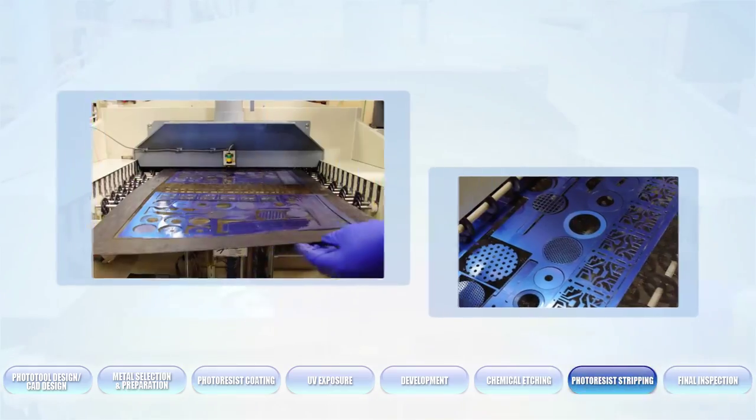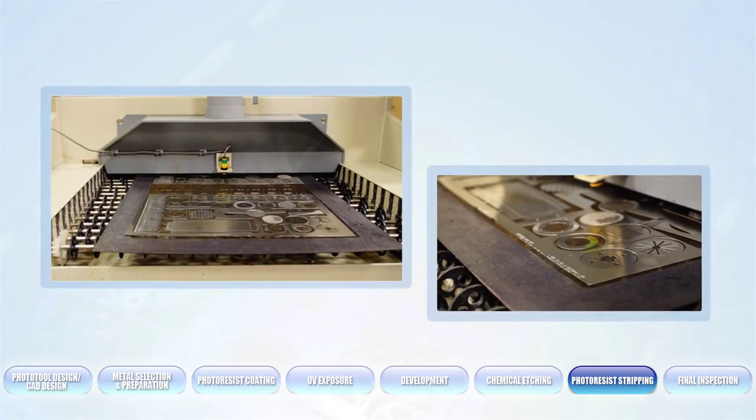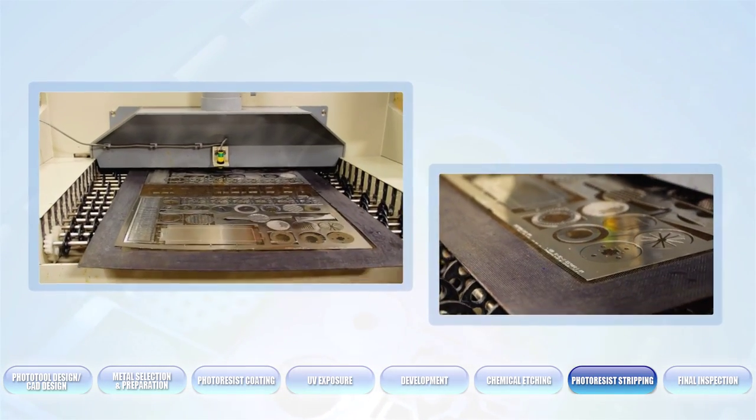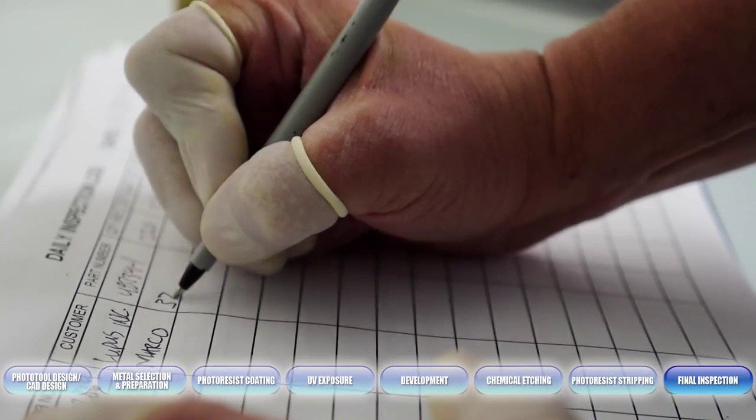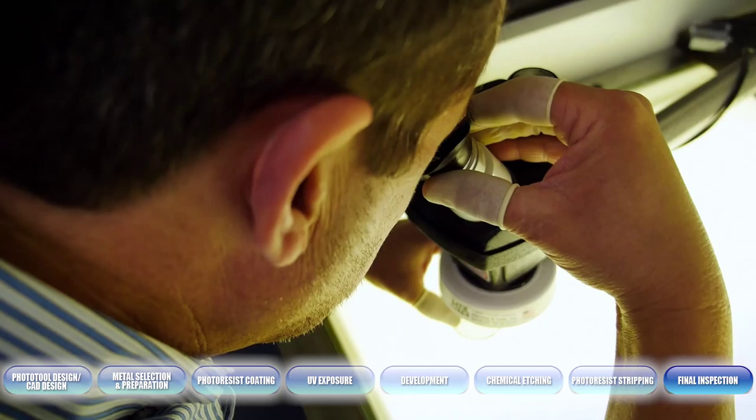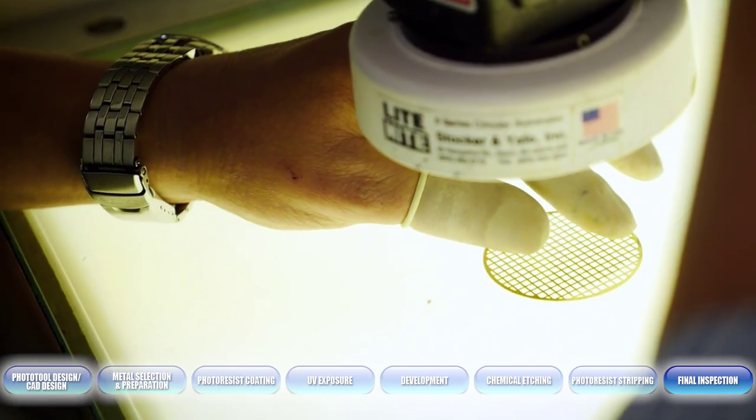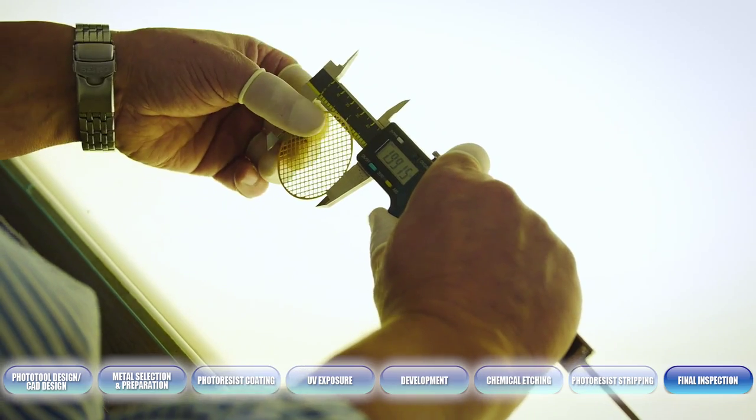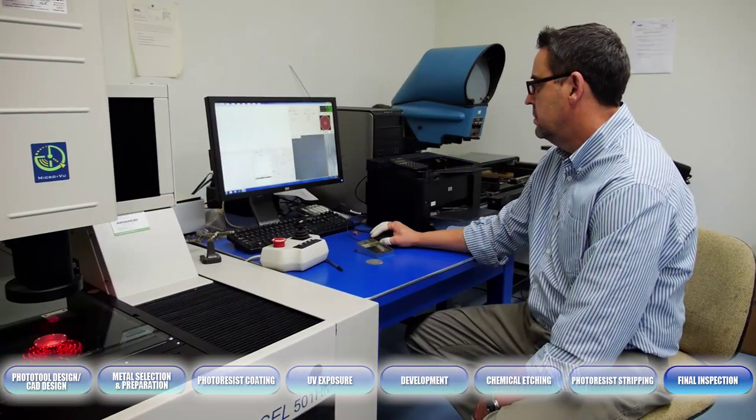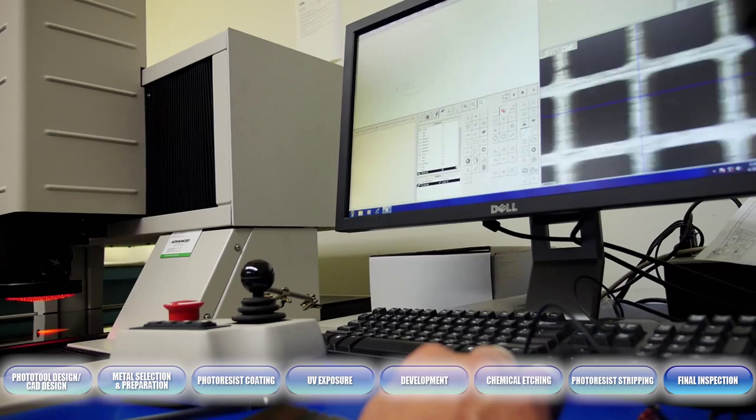After the parts have been etched, the resist needs to be taken away in the stripping process. After all the processes have been completed, the parts are ready for final inspection. This will ensure that the parts are made to correct dimensional specifications with no imperfections, no defects, producing high quality parts at a fraction of the cost of traditional methods.